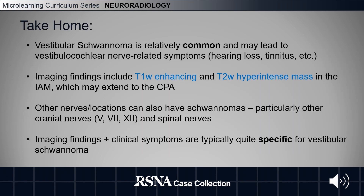In conclusion, a vestibular schwannoma is relatively common and may lead to vestibulocochlear nerve-related symptoms like hearing loss and tinnitus. Imaging findings include T1-weighted enhancing and T2-weighted hyper-intense masses in the internal acoustic meatus, which may extend into the cerebellopontine angle. Other nerves and locations can also have schwannomas, particularly other cranial nerves and spinal nerves. Imaging findings and clinical symptoms are typically quite specific for vestibular schwannoma.